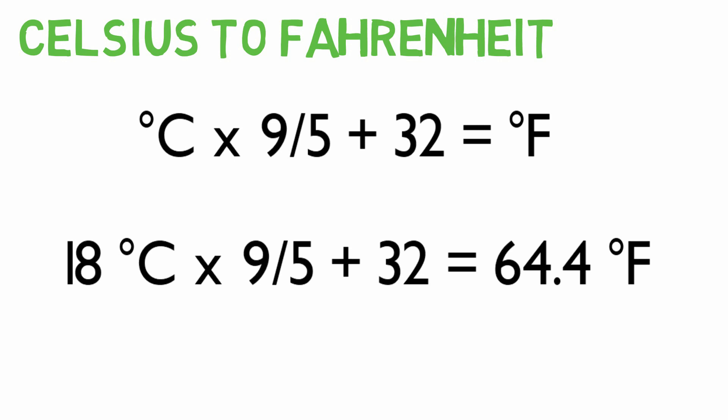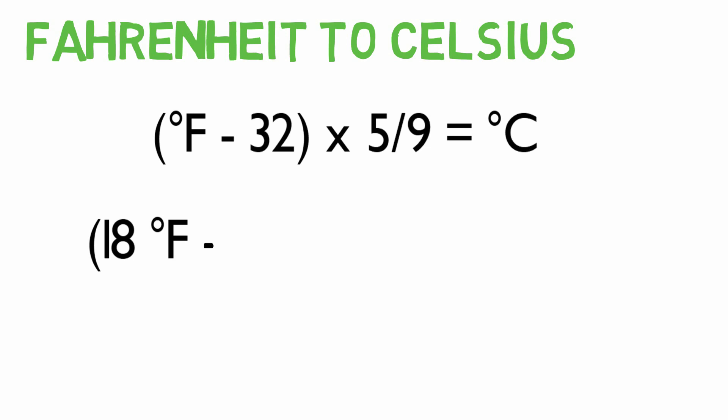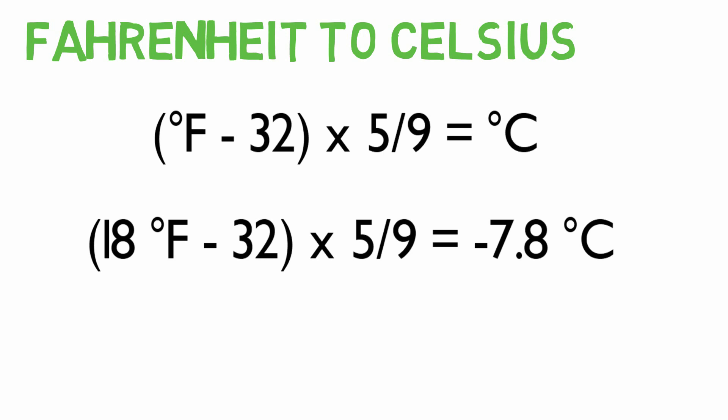Now let's go the other way and convert 18 degrees Fahrenheit into degrees Celsius. The equation looks like this. We first need to subtract 32, then multiply the result by 5 ninths, giving us negative 7.8 degrees Celsius.